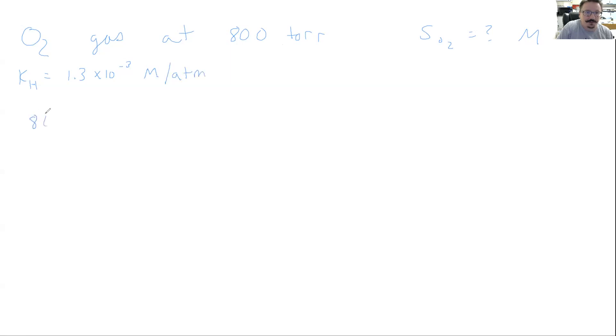This is molarities per atmosphere. So we need our pressure to be in atmosphere. So that's going to be our first step is we're going to take that 800 torr. We're going to divide by 760 or we'll write it out this way. One atmosphere is 760 torr. So torr cancel.